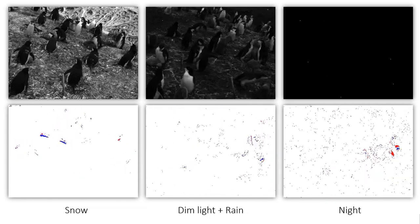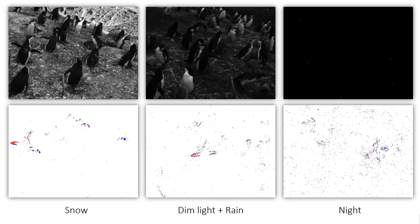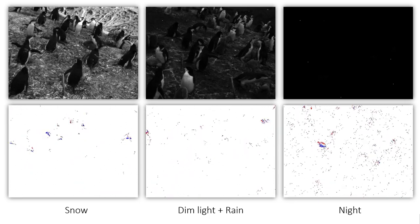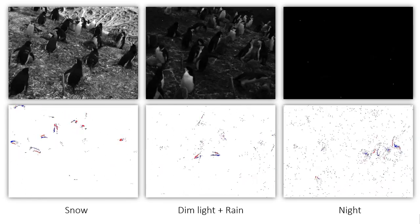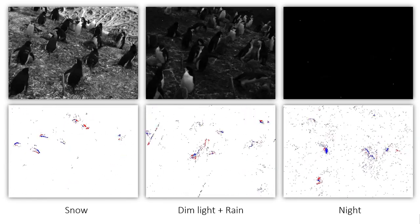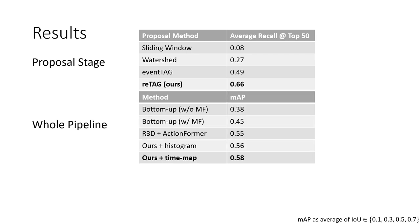Our dataset contains data from different lighting and weather conditions. The experiments show the robustness of our event-based system against different changes, especially in low-light conditions where grayscale frames are completely black. Our results show that our proposal stage outperforms comparison methods while producing considerably fewer proposals than a sliding window approach. The whole pipeline achieves a mean average precision of 58% and outperforms the baseline methods.